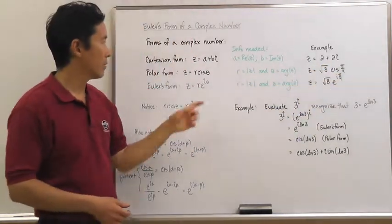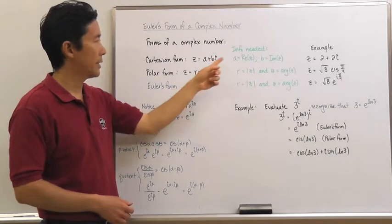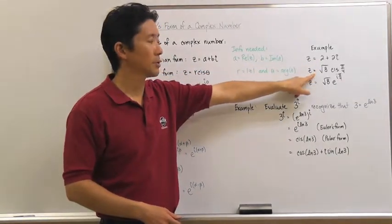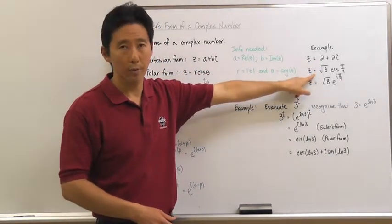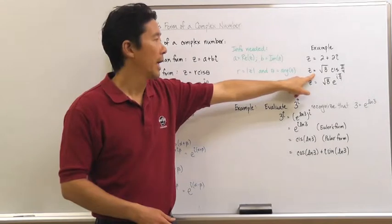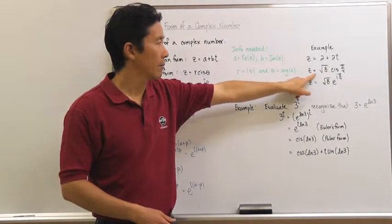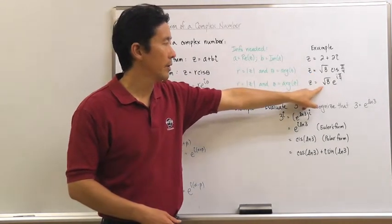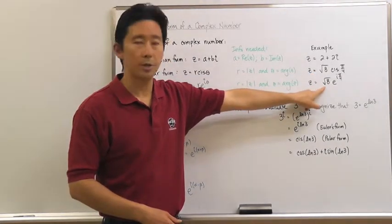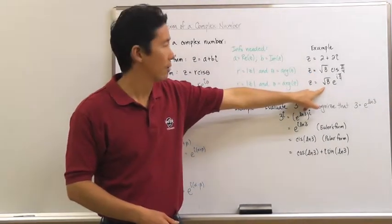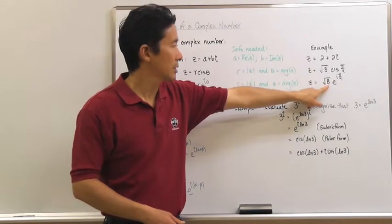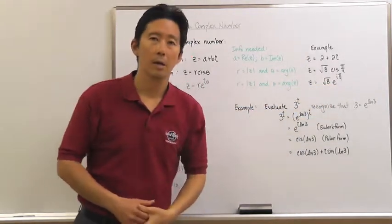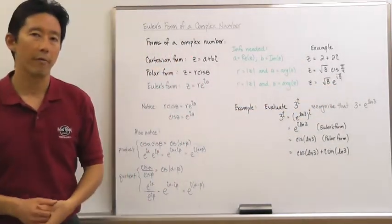So we can rewrite that Cartesian form into its associated polar form, and again we can rewrite this in its associated Euler's form, which is the square root of 8 e to the i times pi over 4.